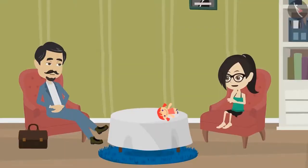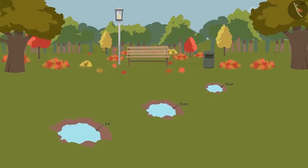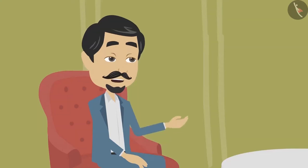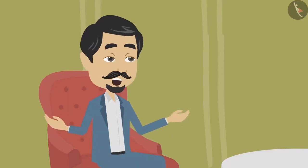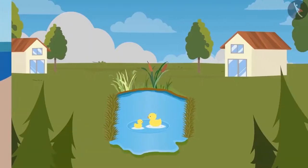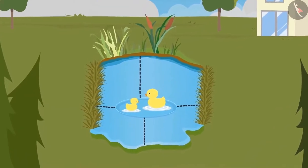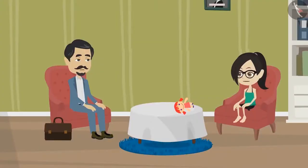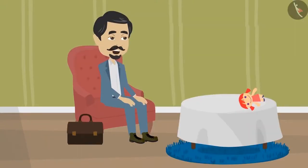What are the other objects whose depth can be measured? You have already discovered examples of pits, cupboards and kitchen utensils whose depth is measured. Similarly, the depth of the well is measured, the depth of the sea is measured, the depth of the pond is measured, and the depth of a planter is also measured. And the depth of all these is measured in centimetres and metres?